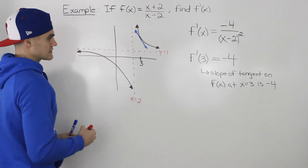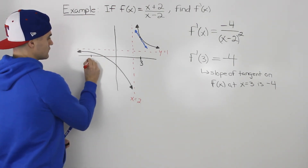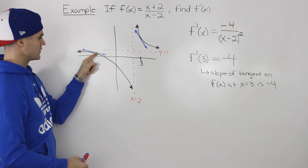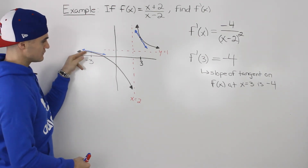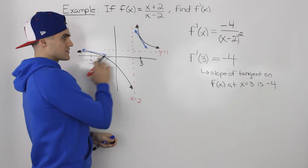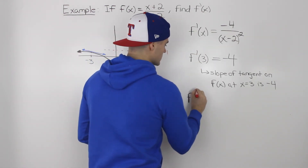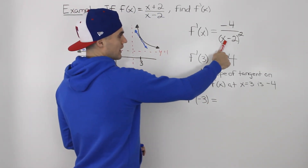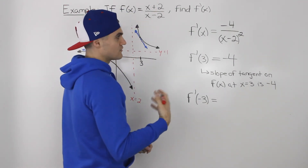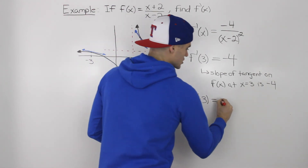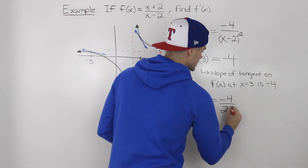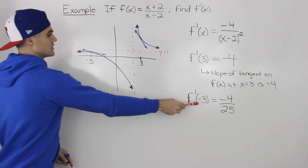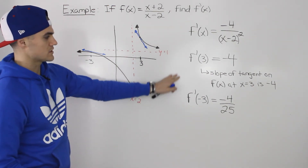Now let's find the slope of the tangent at x=-3. Drawing a tangent at that x value gives us the blue line shown. To find the slope, we plug x=-3 into the derivative: f'(-3). We get -3-2 = -5, and (-5)² = 25, so the slope is -4/25. The slope of the tangent on f(x) at x=-3 is -4/25.